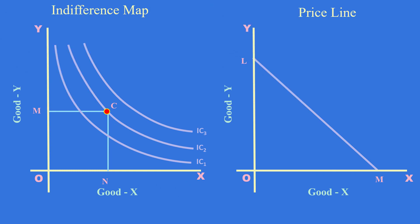In indifference curve analysis, indifference map and price line are used in determining consumer equilibrium. Slope of an indifference curve is given by marginal rate of substitution of X for Y. Indifference map shows the taste and preference of the consumer.